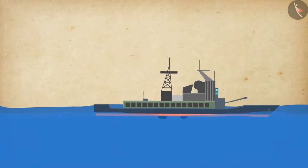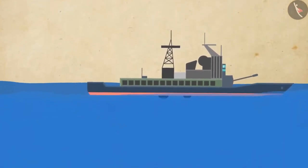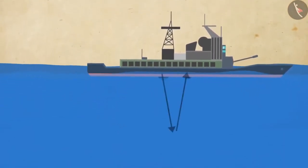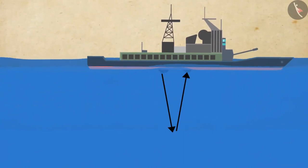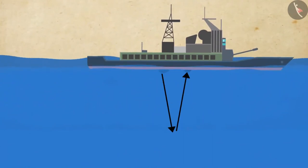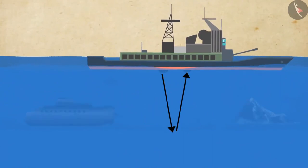This method is known as echo ranging, which is used to determine the depth of the sea and locate sunken ships, hills, submarines, icebergs, etc.